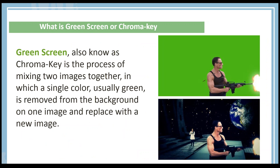What is green screen? Green screen, which is also known as chroma key, is basically the process of mixing two images together. That's when a single color — which is usually green, but can be blue, and has even been known to use other colors — is removed from the background, and then one image replaces it.